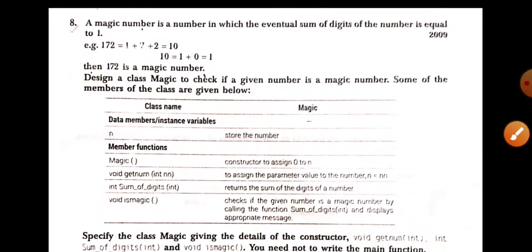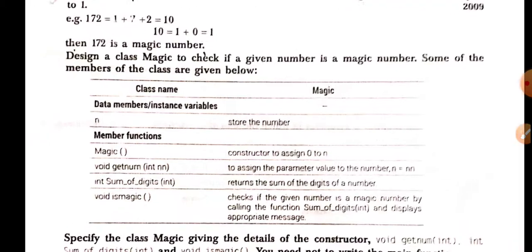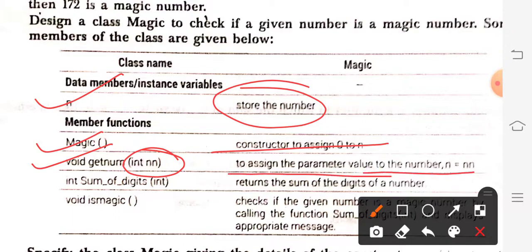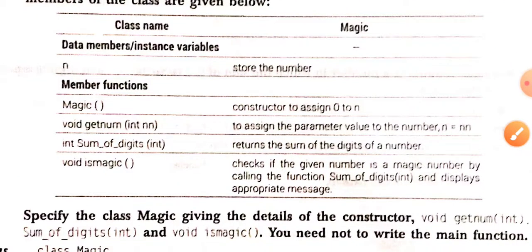Now let us see the description — you can take a screenshot. The class name is Magic. Variable n stores the number. Magic is a constructor that assigns 0 to n. void getNum takes a parameter double n to assign the parametric value to n. sumOfDigits takes one integer type argument — the variable name is not specified, so you need to take it yourself — and it returns the sum of the digits of the number. Next is isMagic, which checks if the given number is a magic number by calling the function sumOfDigits and displays an appropriate message.